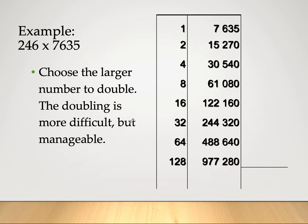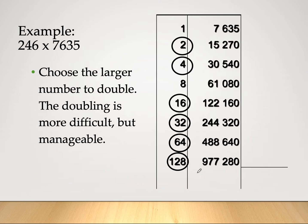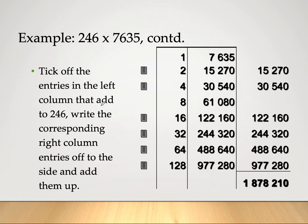We double both columns. The left column gives: 1, 2, 4, 8, 16, 32, 64, 128 — these are the binary powers used in everyday computing storage. We double 7,635 repeatedly to get the corresponding right-column values. Then we choose the left-column numbers that add up to 246: 128 plus 64 is 192, plus 32 is 224, plus 16 is 240, plus 6 is 246. We place tick marks on those rows.